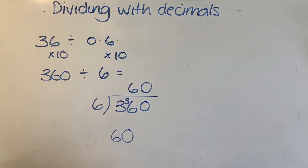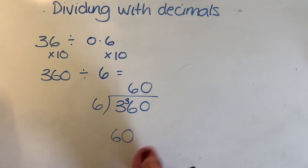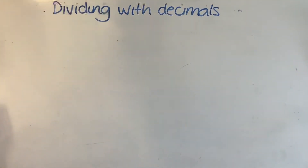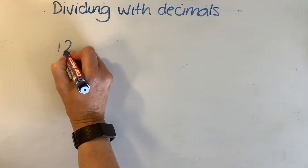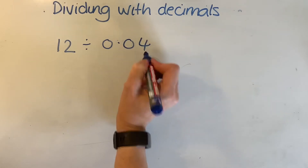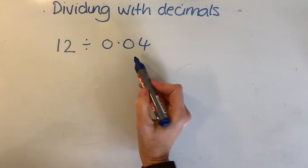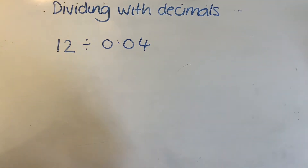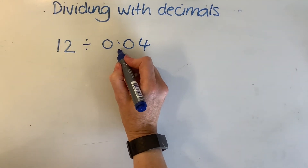If you had a question that was slightly longer than this one — let's rub that out — so if you had 12 divided by 0.04, we would use the same method. We want to convert this into a whole number, so I don't times it by 10, I times it by 100. I basically move the decimal point two places.